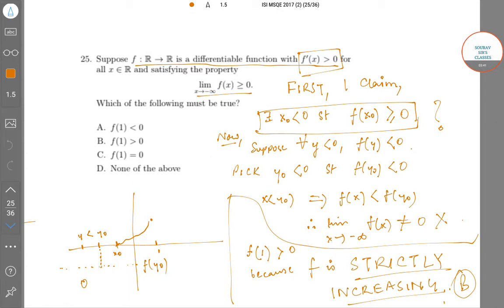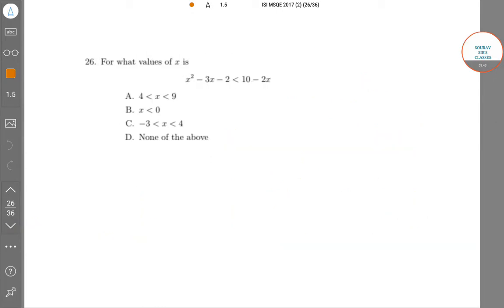Now let us look at the next problem. The question is: for what values of x is x² - 3x - 2 < 10 - 2x? This is a relatively simple quadratic inequality.